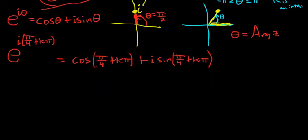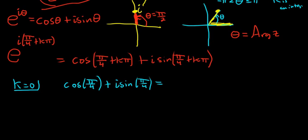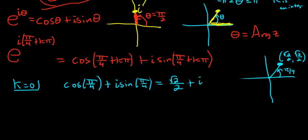Let's start with a simple case. Let's say that k is equal to 0. So if k is equal to 0, we just get cosine of pi over 4 plus i sine of pi over 4. We all know on the unit circle, that's going to be square root of 2 over 2, square root of 2 over 2. So this is going to be square root of 2 over 2 plus i square root of 2 over 2. So that's one answer to the square root of i.